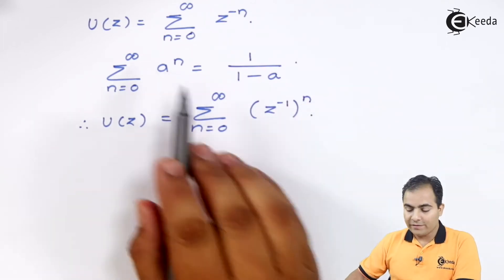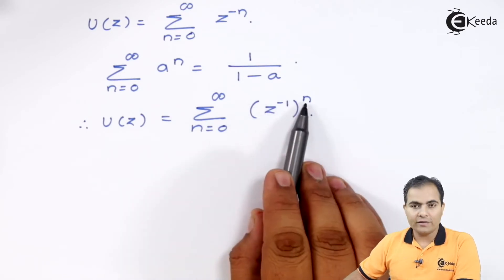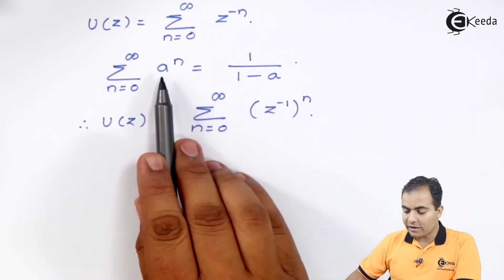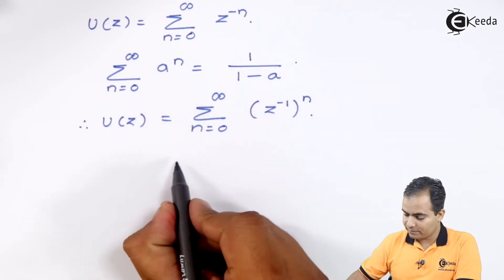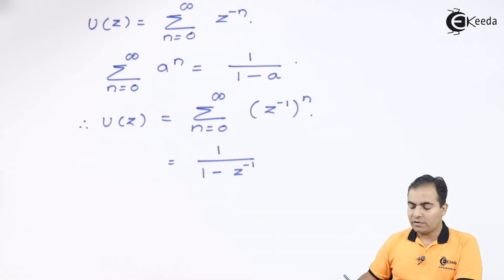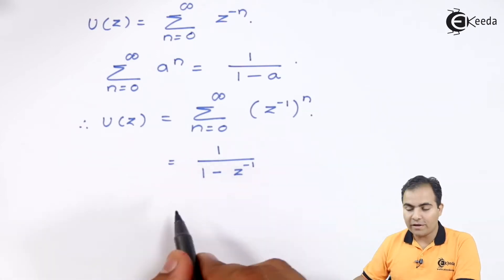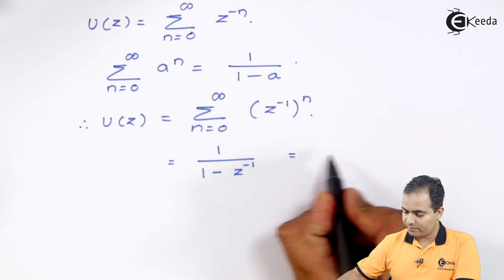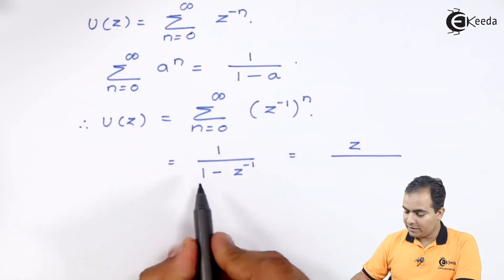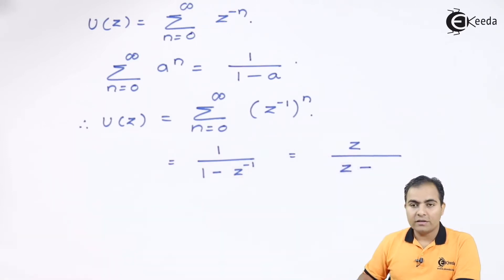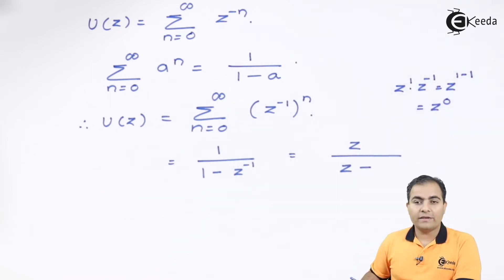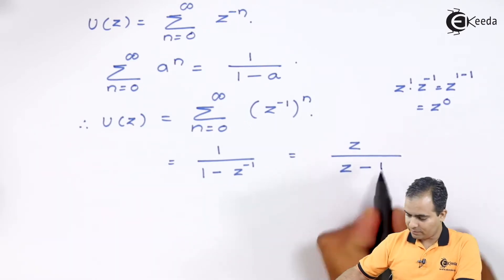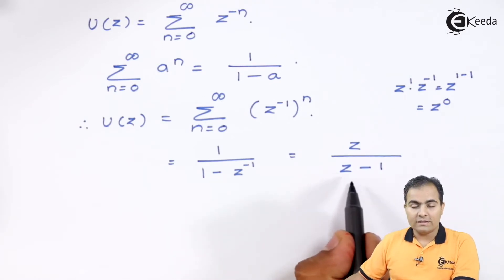So, substituting a = z^(−1) into the formula gives 1/(1 − z^(−1)). But this is not the exact form — we have to multiply and divide by z. z times 1 is z in the numerator; z times z^(−1) in the denominator gives z^0 = 1. So the result is z/(z − 1). This is the Z-transform of u(n).